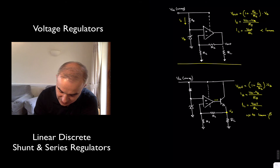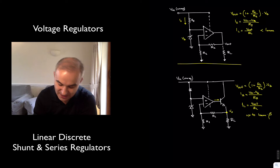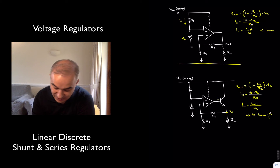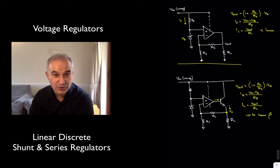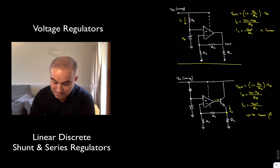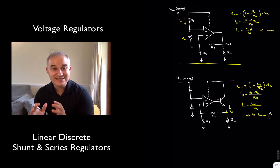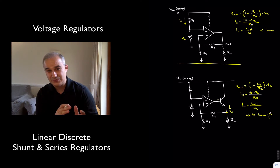So, if this was our maximum op-amp output current, and this is now the base current into the transistor, we can amplify the load current beta times by using a transistor. The analysis is the same as in the previous video.